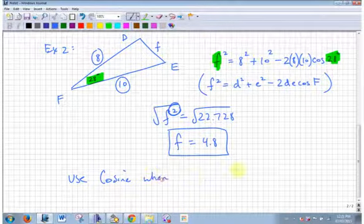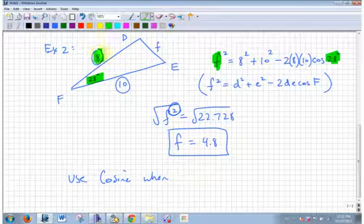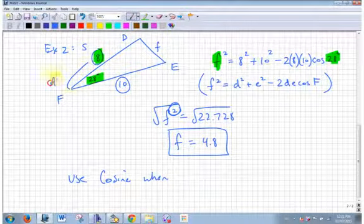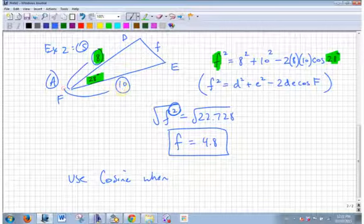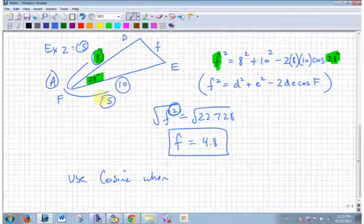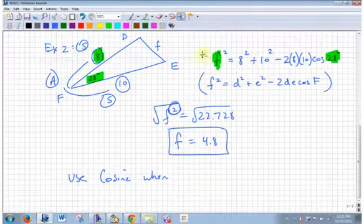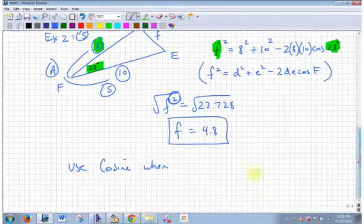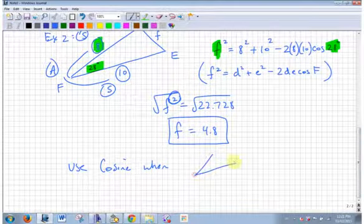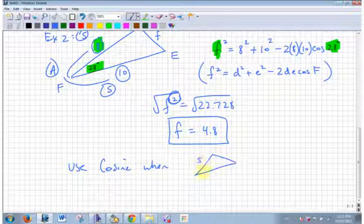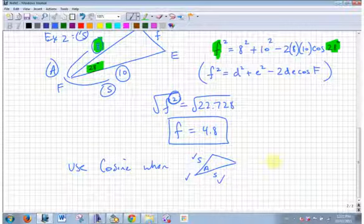When you see this situation here, I got a side, I have the angle, and I have another side, and the angle's between the two sides. How can we do that more visually appealing? When I know side-angle-side, I use cosine law. Tomorrow we'll look at the other way you're going to use cosine law.